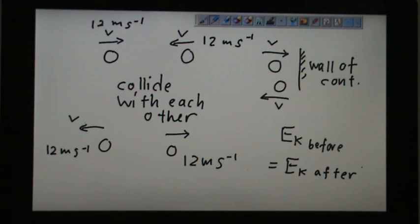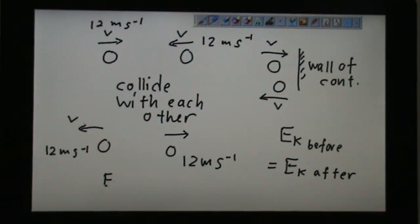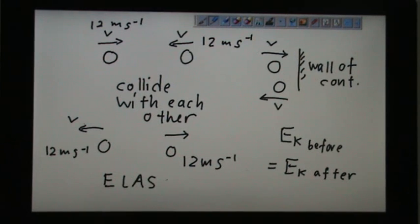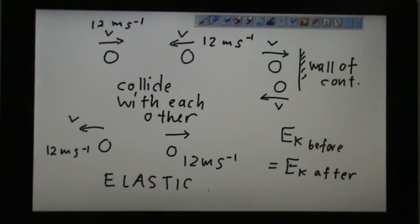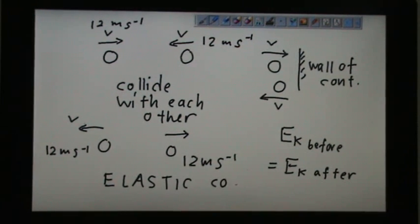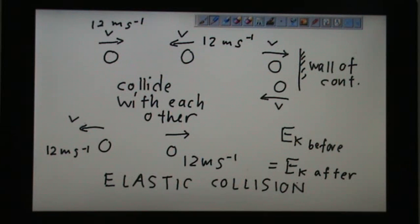So this kind of collision, we call it elastic collision. You will find out more from your physics teacher, or you can visit my another website, the physics idiot at YouTube. So this elastic collision shows that there's no loss of kinetic energy.